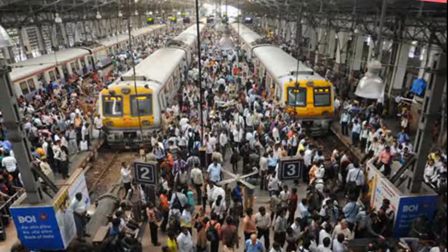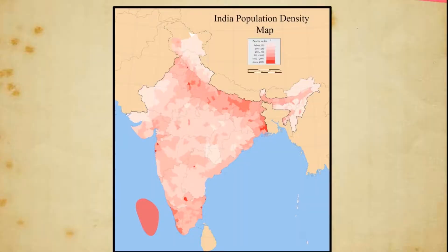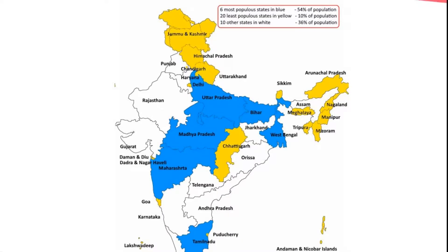Nearly half of the population lives in five states: Uttar Pradesh, Bihar, Maharashtra, Andhra Pradesh, and West Bengal. The other half lives in the remaining 23 other states and seven Union territories. About one-sixth of the population resides in Uttar Pradesh alone. Population distribution in India is not even.